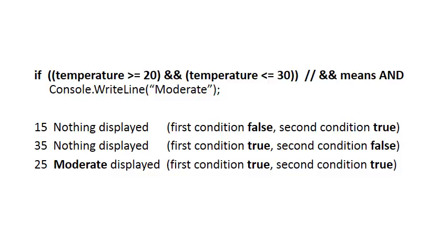Let's make sure you understand what the 'and' means. If the user enters 15, then clearly the first condition (greater than or equal to 20) is false, but the second condition is true — it's less than or equal to 30. For the 'and' condition to be true, both sub-conditions must be true, so in that case nothing will be displayed.